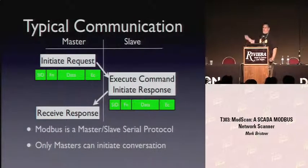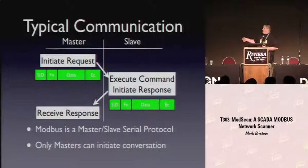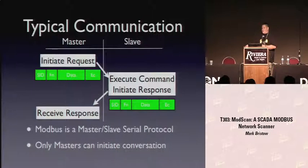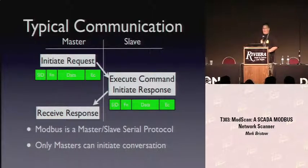Now let's talk about communication flow. It's really simple. You've got a master and a slave. Masters are the only ones that can start communications - slaves cannot under any circumstances, at least in the spec, though some vendors have added that functionality. Basically a master sends a request out to a slave, the slave does something, and the slave responds. Pretty simple.